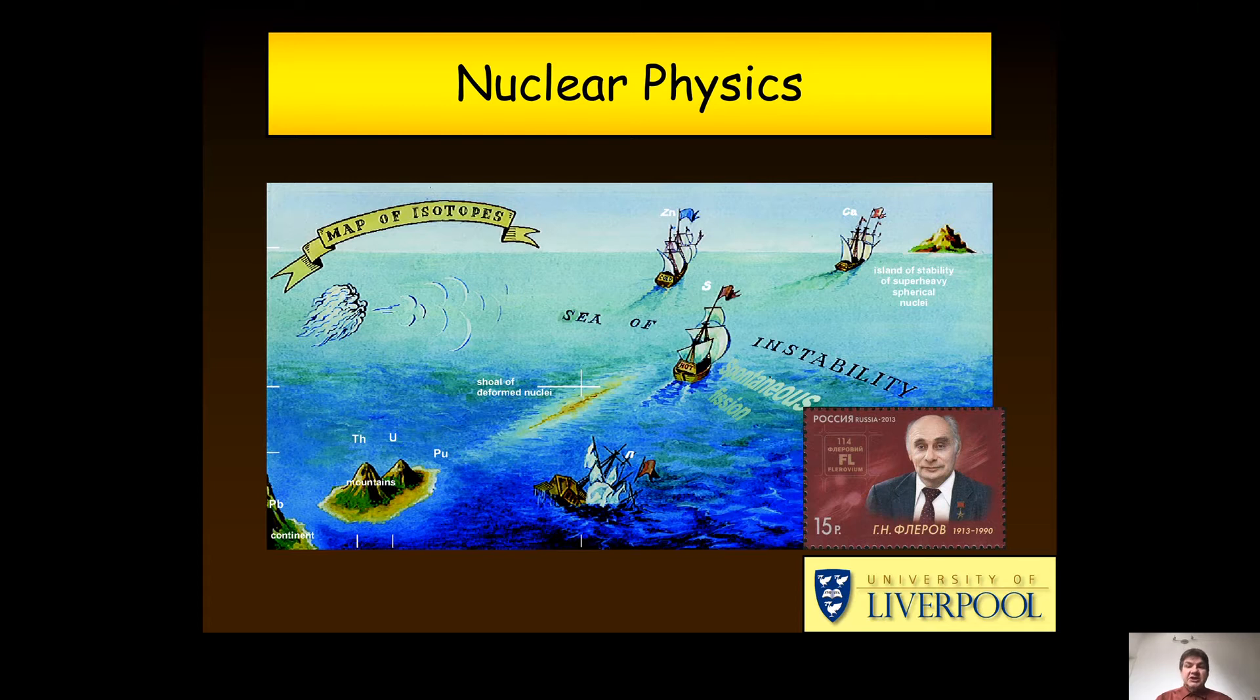But that poses a problem because you are now making these atoms one at a time in a particle accelerator and you need to be able to identify what you have actually created. And this is where alpha decay comes in.